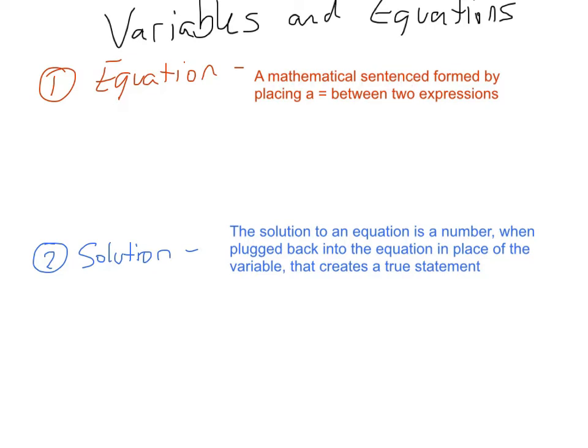Well, it's a mathematical sentence that's formed by placing an equal sign between two expressions. So that's an expression, and that's our equal sign, and that's an expression. So we have an expression and an expression separated by an equal sign. That is an equation. So when you think about equation, think equal sign.